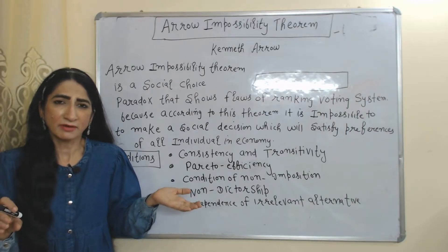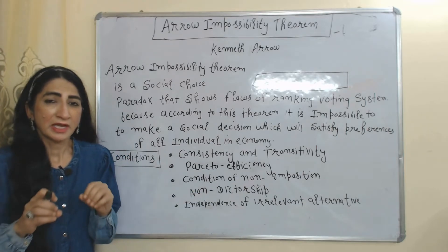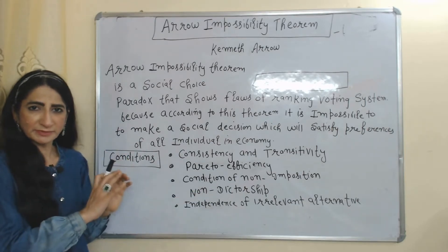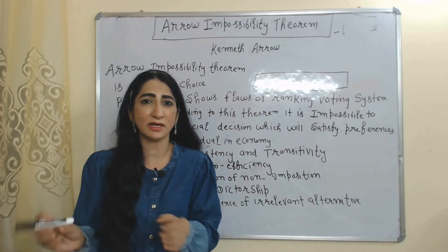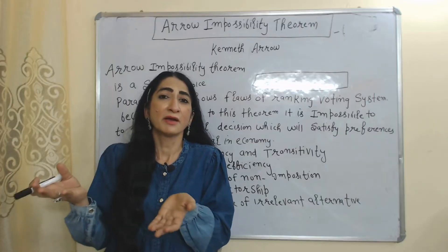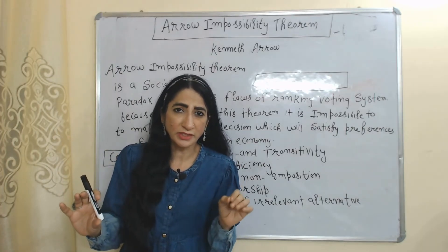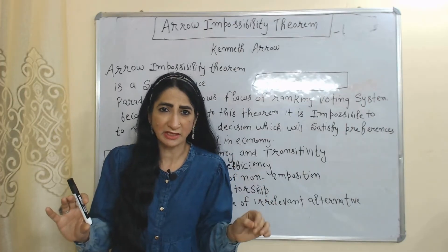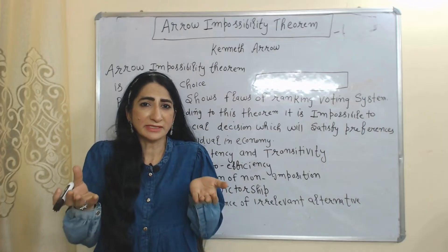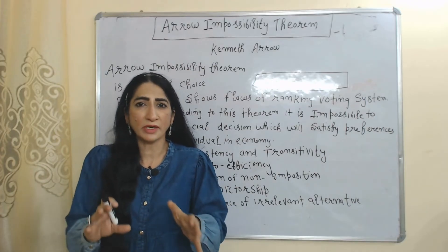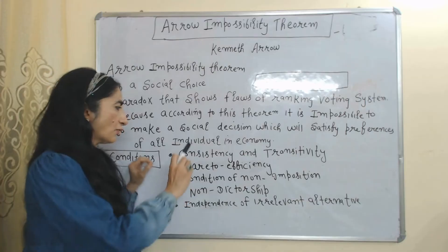Arrow's Impossibility Theorem is a social choice paradox which shows the flaws of ranking voting systems. According to the theorem, it is impossible to make a social decision which will satisfy the preferences of all individuals in an economy.